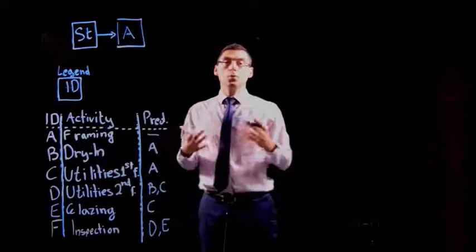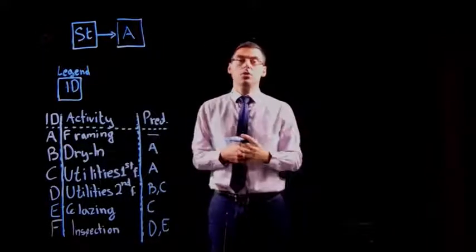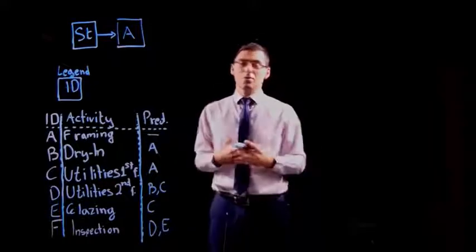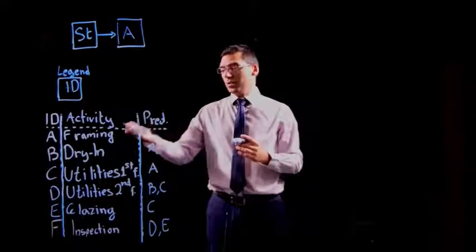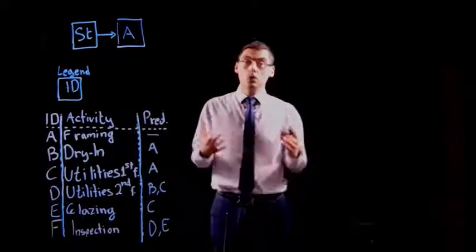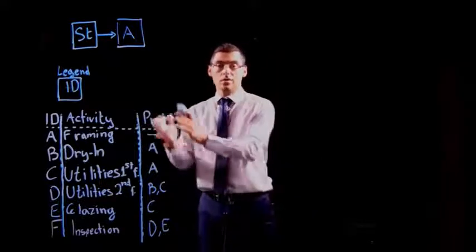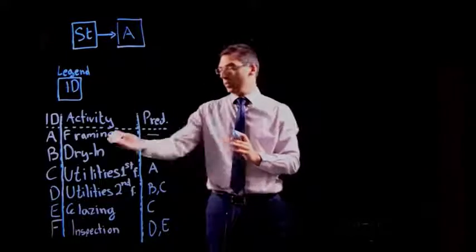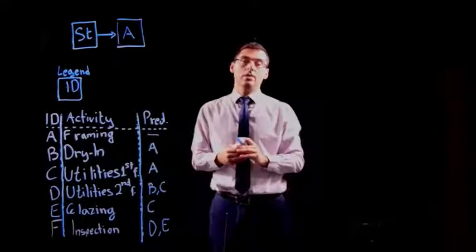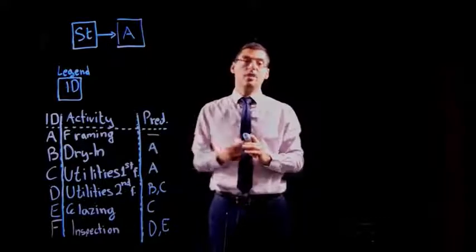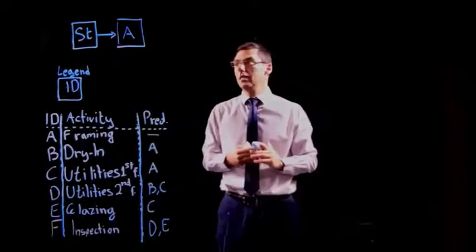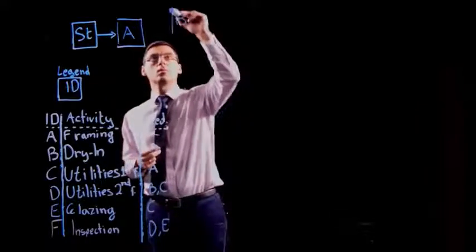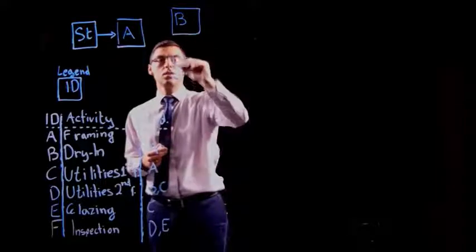Now, after you put all the activities that have no predecessors, you have to pick, the algorithm says at random, but I bet that you're going to be cleverer than that and you're going to pick the next activity and make sure that all the predecessors of the activities that you're going to pick have already been placed in the network. That would be the case for activity B and activity C, because both of them have as a single predecessor activity A. So there you go. That's activity B. That's activity C.